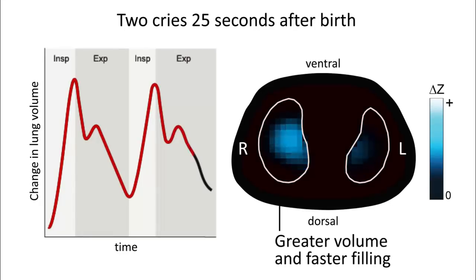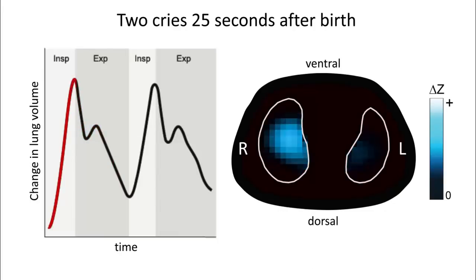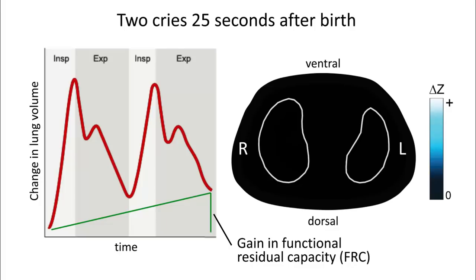More striking is the behaviour of the lung during expiration. Shortly after expiration begins, there is a cessation of expiratory gas flow and volume loss, followed by a brief redistribution of gas towards the ventral lung. The remainder of the expiration then occurs at a slower flow rate. At the end of expiration, lung volume is greater than at the start of the breath, indicating a gain in functional residual capacity.